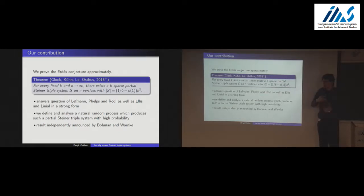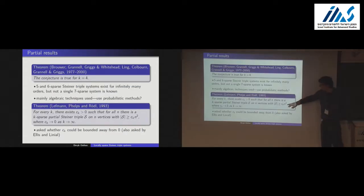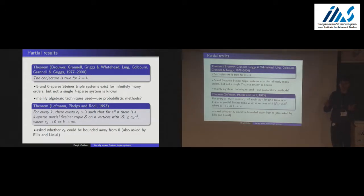The number of uncovered pairs is only a negligible fraction of the total number of pairs. This answers the previous question in a very strong form: we can find C_K essentially equal to 1/6, which is as large as you can make it.